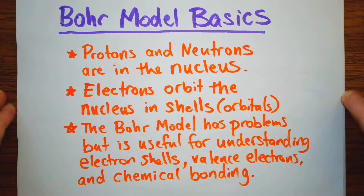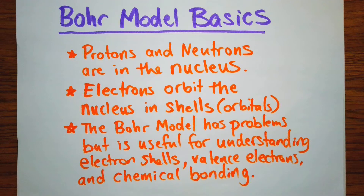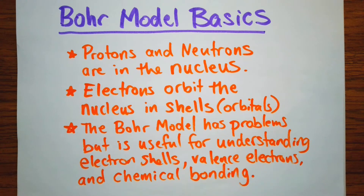The basics of the Bohr model: in the nucleus of an atom, you're going to have protons and neutrons. Then electrons are going to orbit the nucleus in shells. According to the Bohr model, they would orbit in shells or orbitals, kind of like planets orbit the sun.